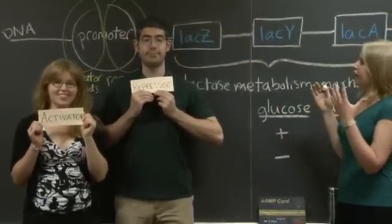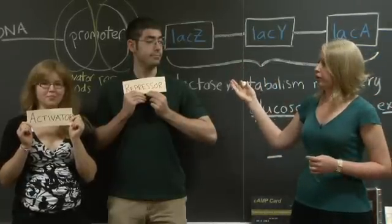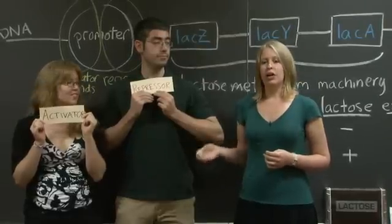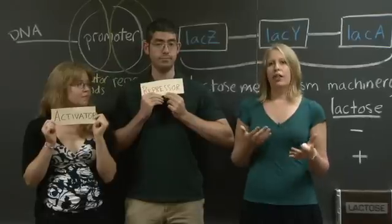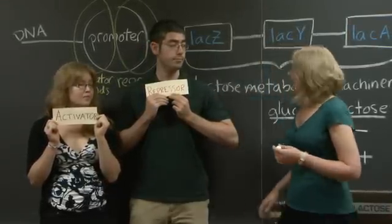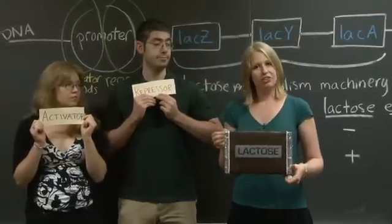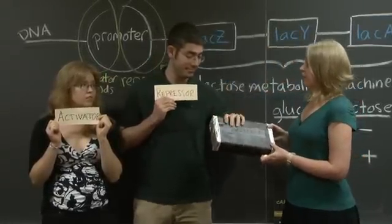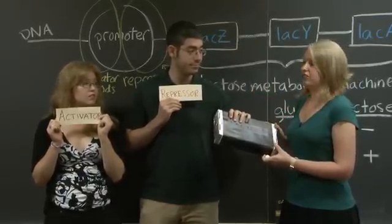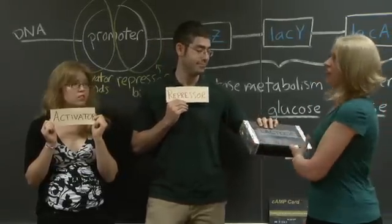When the repressor is bound, polymerase cannot bind to the promoter. Polymerase also needs the activator to be bound to the promoter in order to bind. So, how can the E. coli regulate when the repressor and activator are bound to the promoter? Well, when we have lactose in the system, I have lactose right here, the repressor is able to bind lactose. The repressor only binds to the promoter when there is no lactose, and when binding to lactose, the repressor comes undone from the promoter.